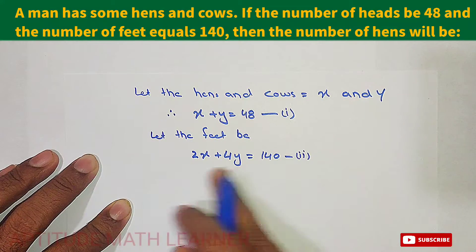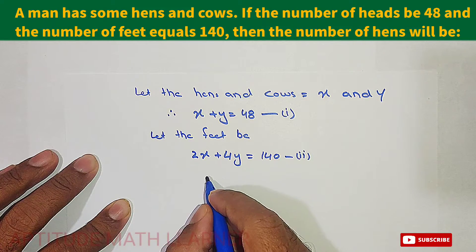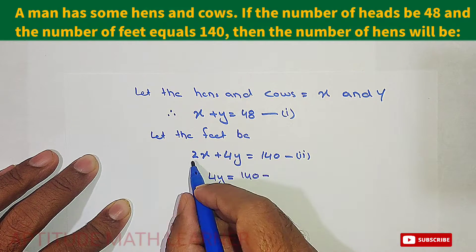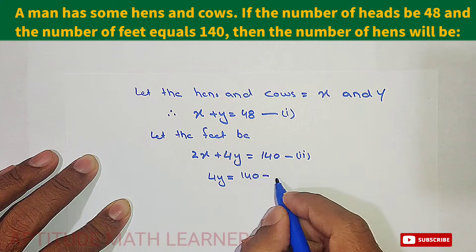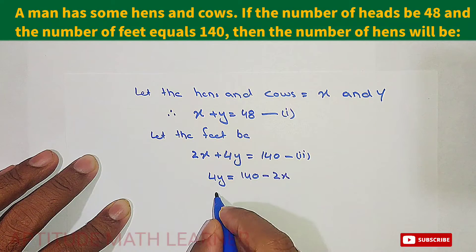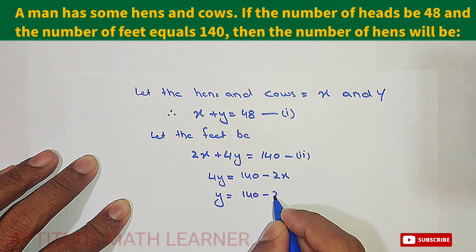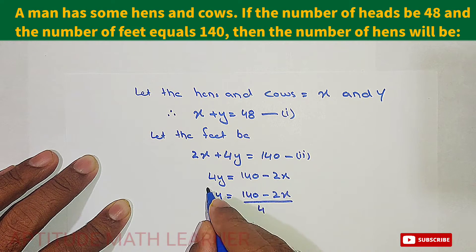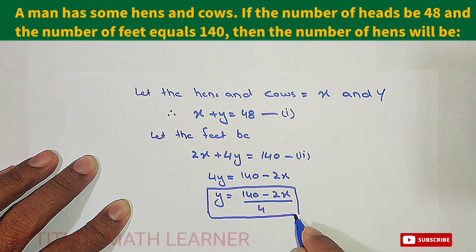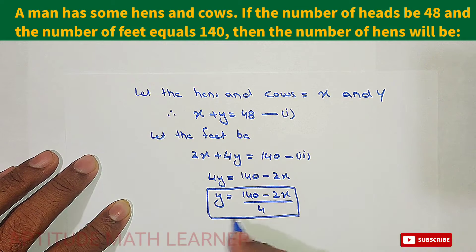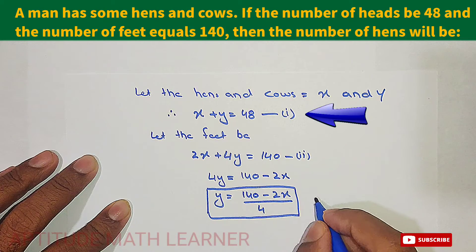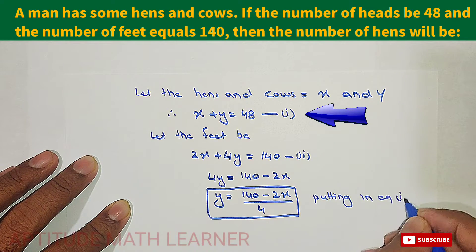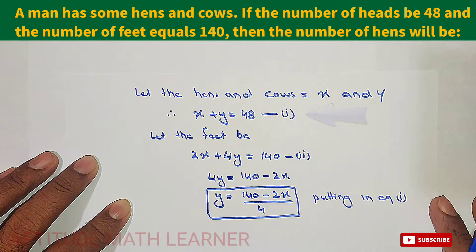Solving equation two, we get 4y equals 140 minus 2x, so y equals (140 minus 2x) divided by 4. We have now found the value of y. The next step is to substitute this value into equation one.